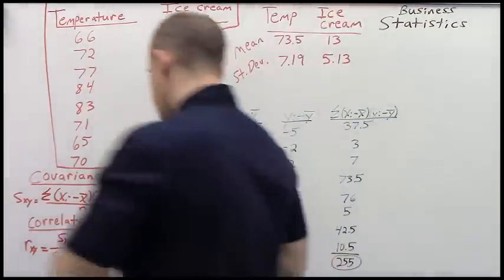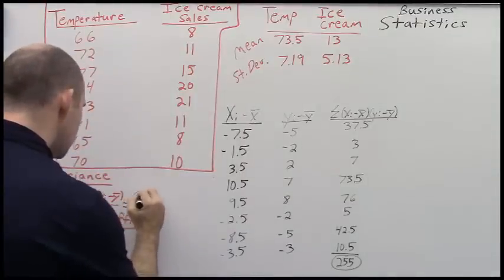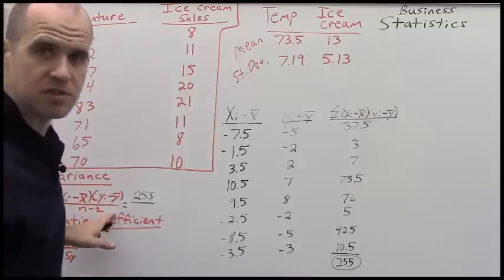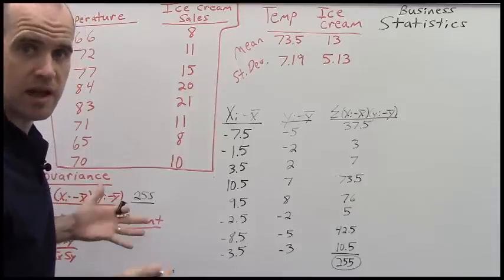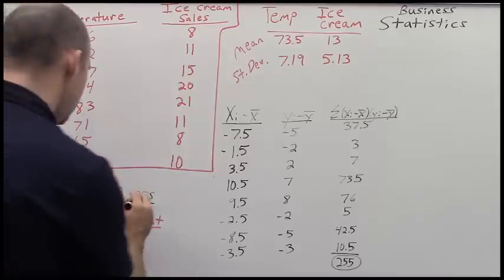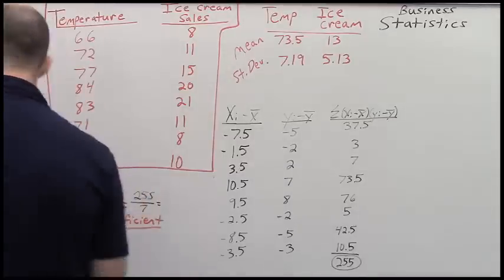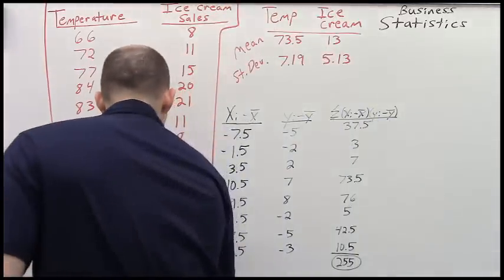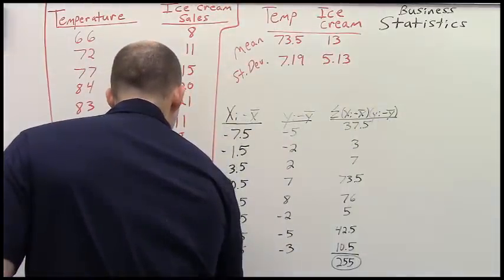Then I sum those here and I get a value of 255. So that is my numerator for the covariance, 255, and I'm dividing by my sample size minus 1. So 8 minus 1 because I have 1, 2, 3, 4, 5, 6, 7, 8, and that equals 7. So 255 divided by 7 is 36.43.